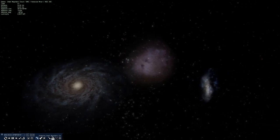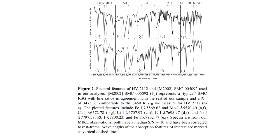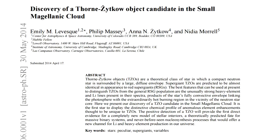HV 2112 looks like a red hypergiant, but in its spectra it has real oddities — large amounts of molybdenum and rubidium. This has led one team to conjecture that it is actually an example of something called a Thorne-Żytkow object, named after Kip Thorne, who is famous for his work on black holes and advising on the movie Interstellar, and Anna Żytkow.